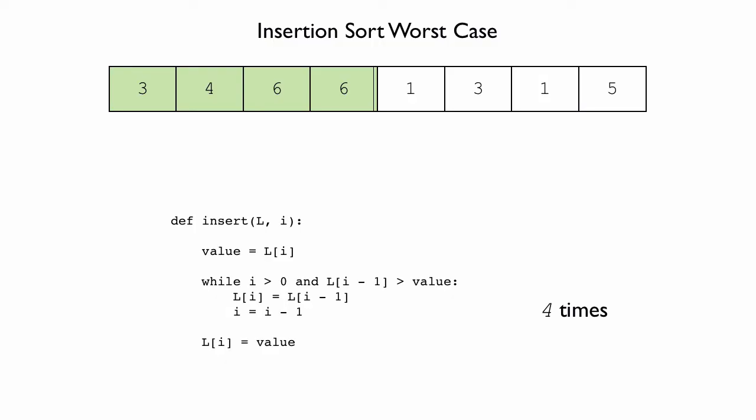The next question is how many assignment statements we are going to execute in total. There are two assignments: one right at the beginning of the function and one right at the end. Those two happen no matter what, even if the while loop never runs. Then inside the while loop, we have two assignment statements that happen every time the loop goes around. So in this case, we have two statements every time the loop goes through, which is 4 times, so 2 times 4 is 8, plus one before and one after the loop — a total of 10 assignment statements.